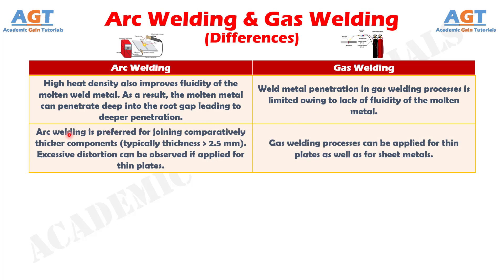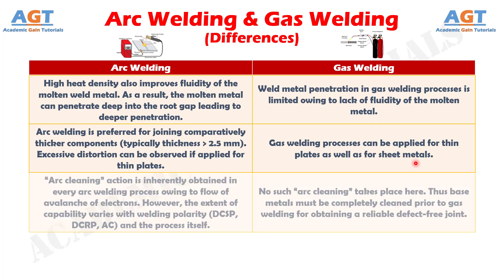Difference number 11. Arc welding is preferred for joining comparatively thicker components, typically with thickness greater than 2.5 mm. Excessive distortion can be observed if applied to thin plates, whereas gas welding processes can be applied to thin plates as well as sheet metals.